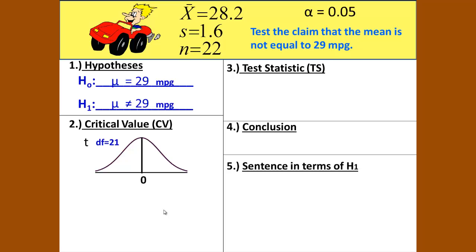Our degrees of freedom are 21, n minus 1, which is 22 minus 1 equals 21. Looking in our table for degrees of freedom of 21 and a significance level of 0.05, remember that this will be a two-tailed test since it is not equal to, and we divide the alpha equally to both tails. So that is 0.025 in each tail. 0.05 divided by 2 gives us 0.025.